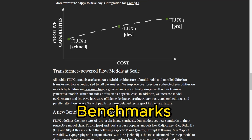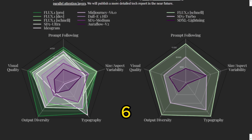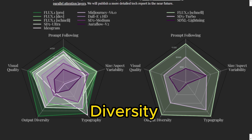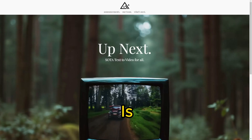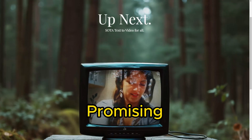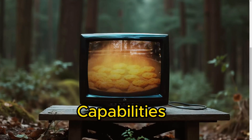In benchmarks, Flux surpasses popular models like Midjourney 6, DALL-E 3, and SD3 Ultra, setting new standards in visual quality, prompt following, and output diversity. And this is just the beginning — Black Forest Labs is already working on a suite of generative text-to-video systems, promising high-definition and rapid video creation capabilities.